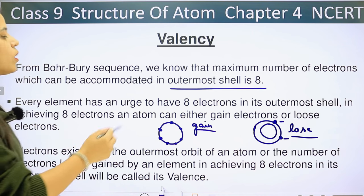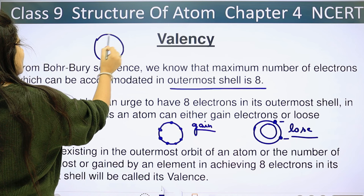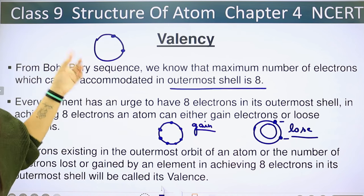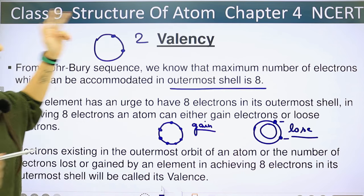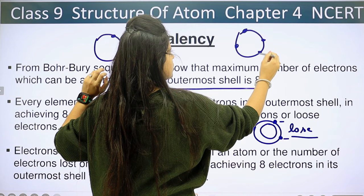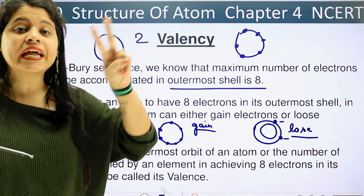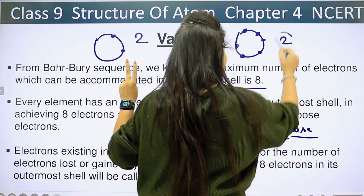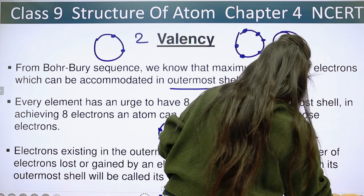If you are looking at an atom's outermost shell, let's suppose it has 2 electrons in its outermost shell — that count will be called its valence. So we will say that its valence is 2. Let's start with examples.